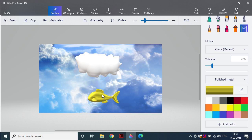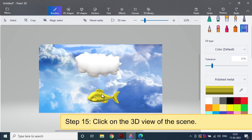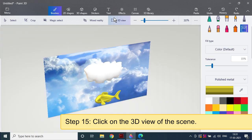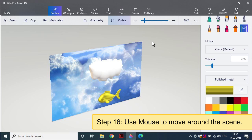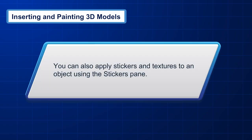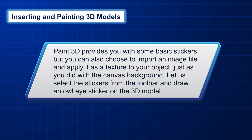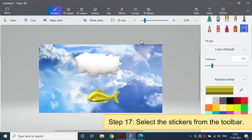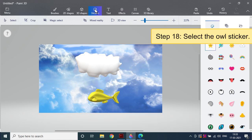The 3D View button shows the 3D view of the entire scene, and you can click and drag your mouse to move your view around. Step 15 – click on the 3D View of the scene. Step 16 – use the mouse to move around the scene. You can also apply stickers and textures to an object using the Stickers pane. Paint 3D provides basic stickers, but you can also import an image file and apply it as a texture, just as you did with the canvas background. Step 17 – select Stickers from the toolbar. Step 18 – select the owl sticker.